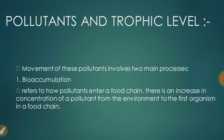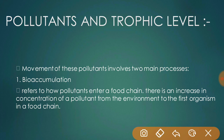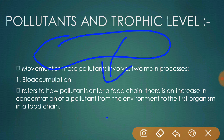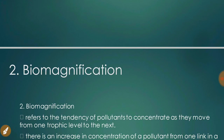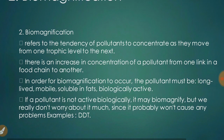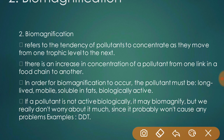Regarding pollutants and trophic levels: non-degradable pollutants — materials which cannot be metabolized by living organisms — move through various trophic levels in an ecosystem. Bioaccumulation refers to how pollutants enter a food chain, with an increase in concentration of the pollutant from the environment to the first organism in the food chain. Biomagnification refers to the tendency of pollutants to concentrate as they move from one trophic level to the next, with an increase in concentration from one link in the food chain to another.